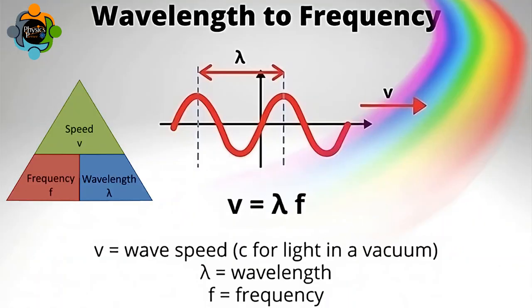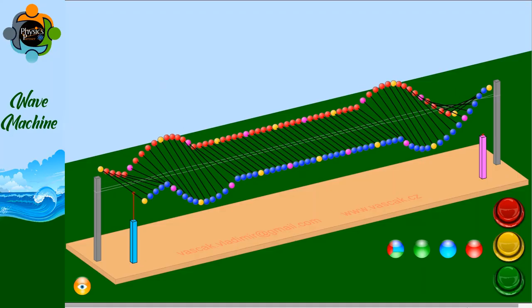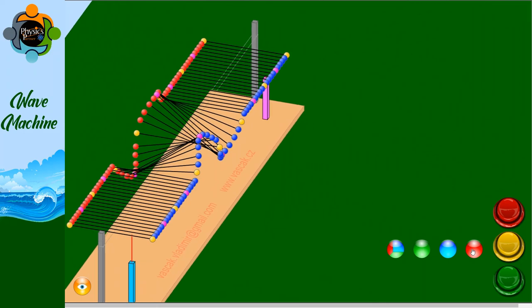Now let's look at the calculation associated with waves. The wave equation is: v = f × λ, where v is the velocity (speed) of the wave in meters per second, f is the frequency in hertz, and λ (lambda) is the wavelength in meters. Remember, lambda is the symbol for wavelength — the unit of wavelength is meters.